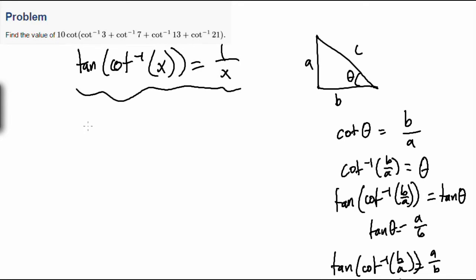So how does that help us? Okay, let's set some variables. Let's say A is cotangent inverse 3, B is cotangent inverse 7, C is cotangent inverse 13, D is cotangent inverse 21.